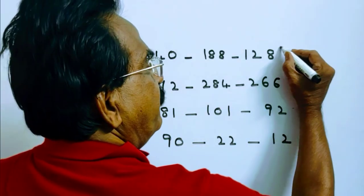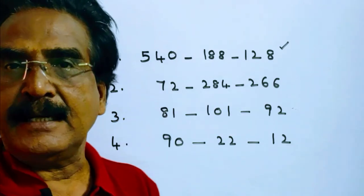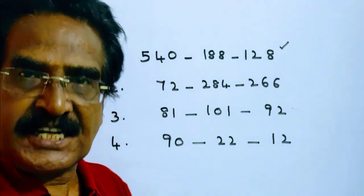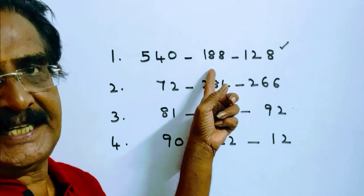If you take this one, 540 divided by 9 equals 60. 60 plus 128 equals 188.